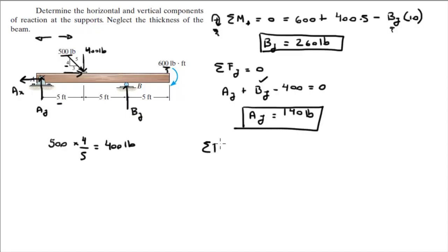And last but not least, we got the sum of the forces in the X is equal to 0, and that's going to help us find Ax. In the X, we have minus Ax plus the X component of the 500-pound force, which is found by doing 500 times 3 over 5.